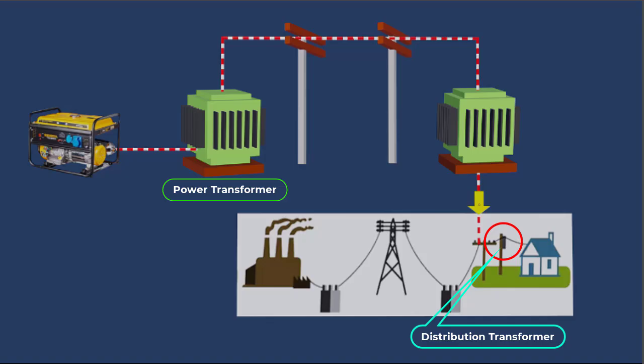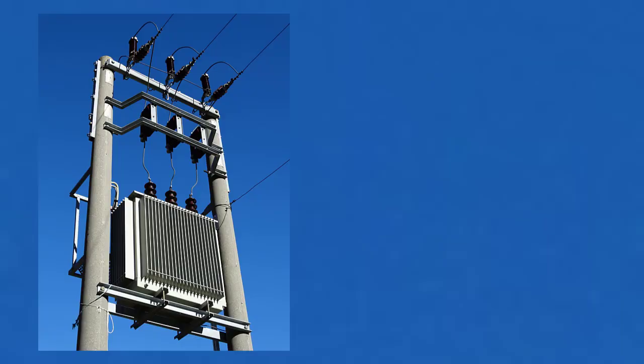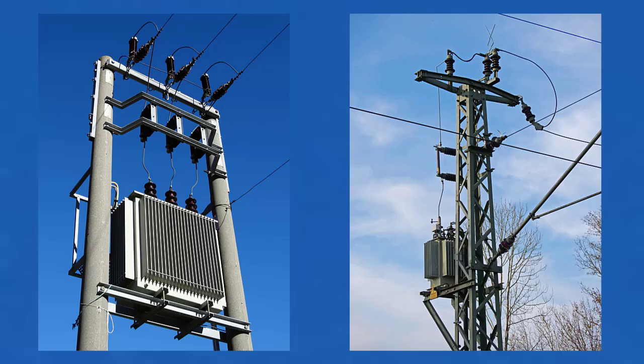Distribution transformers are mounted on utility poles. These transformers further step down voltage for direct use by end consumers.